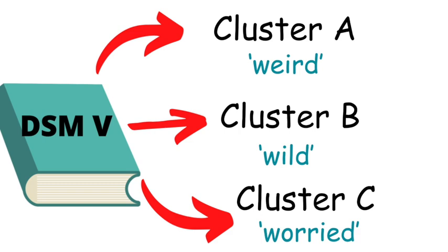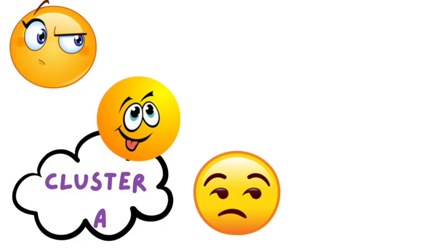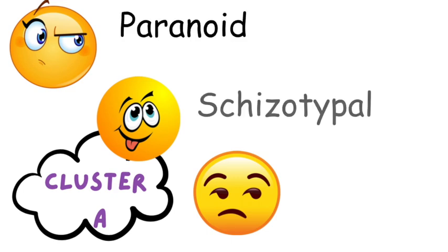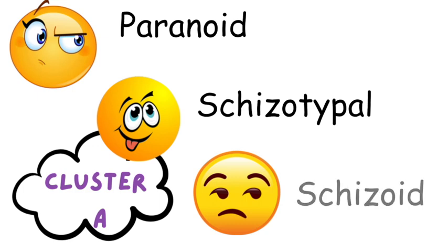It's very important to note that patients with personality disorders experience symptoms that are so severe that it affects their social, personal, or work life. So let's look at these personality disorders in Cluster A. They include three personality disorders, which are paranoid, schizotypal, and schizoid.